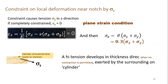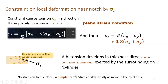No stress on free surfaces — that is the key rule. On the z-axis free surface of the plate, sigma z is zero. This is where the surface condition applies.